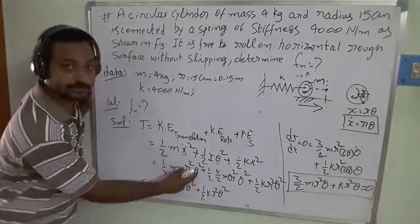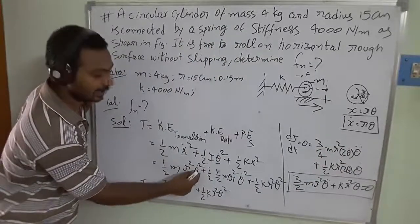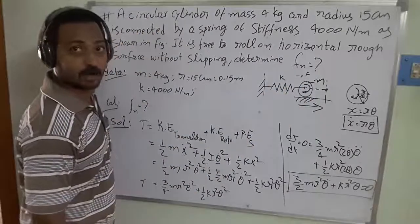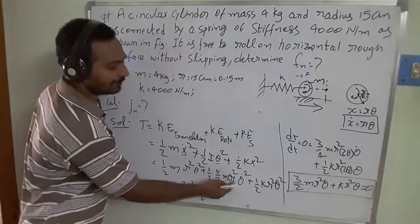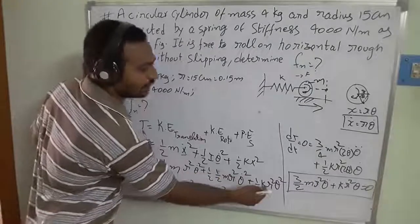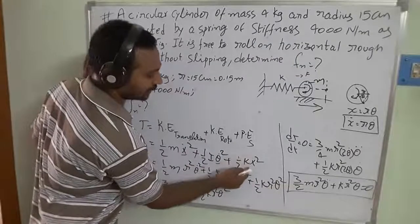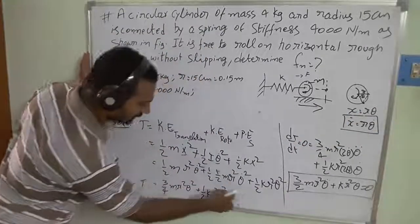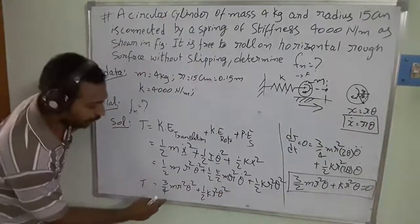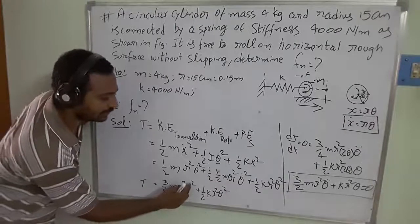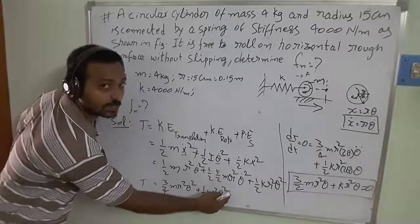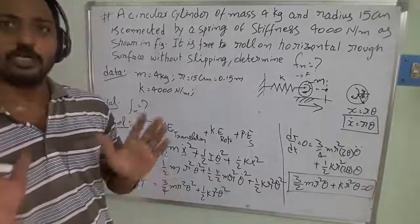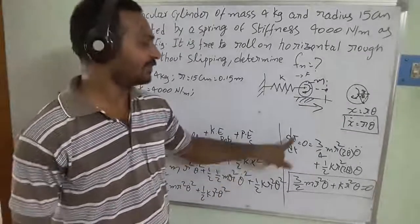After substitution, we get half m r squared theta-dot squared plus the mass moment of inertia I equals half m r squared into theta-dot squared. For the potential energy term, x equals r theta is substituted as x squared equals r squared theta squared. After simplification, the total energy becomes three-quarters m r squared theta-dot squared plus half k r squared theta squared, which is constant.